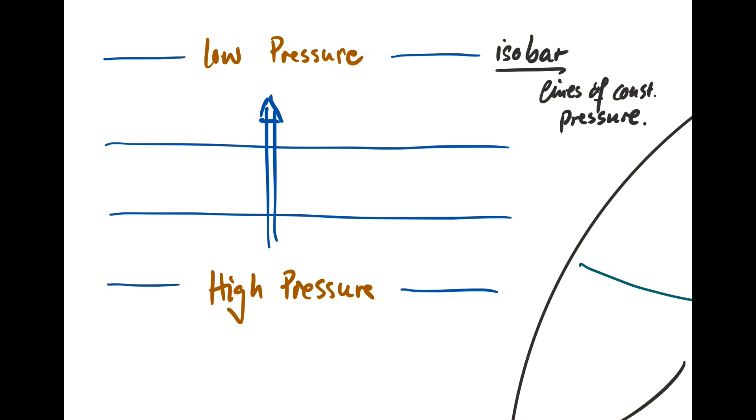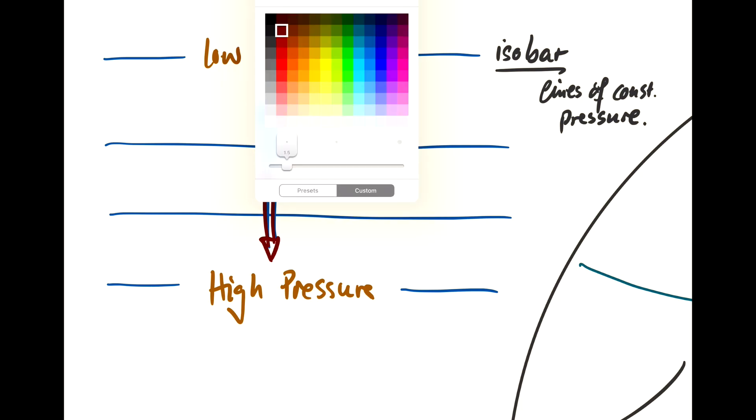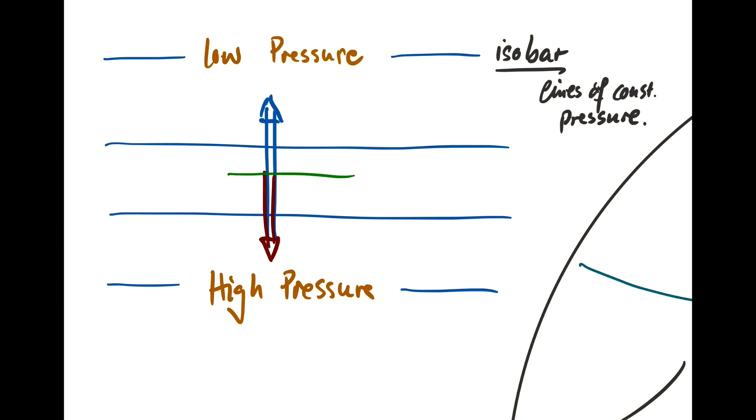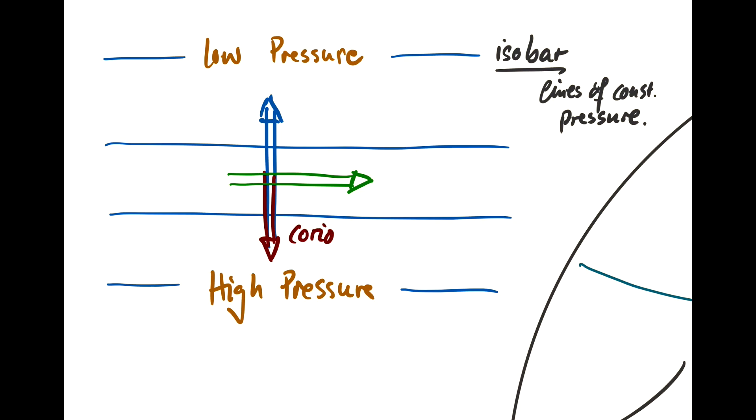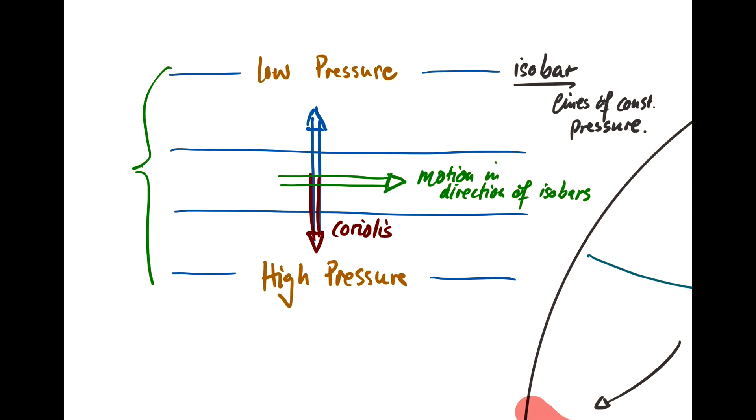So the main force that will balance this pressure gradient force is the Coriolis force. And the Coriolis force always acts to the right of the direction of motion. And in order to balance the pressure gradient force, the Coriolis force has to act downward in our picture here, which means that the direction of motion is to the right. And as a result, the direction of motion is parallel to the isobars. So the direction of motion is along lines of constant pressure. This balance is known as Geostrophic Balance, the balance between the pressure gradient force and the Coriolis force.